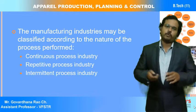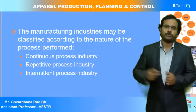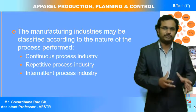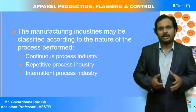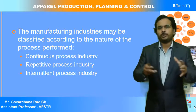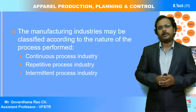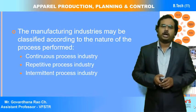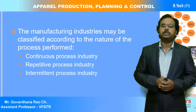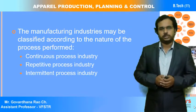Most large companies fall under the category of continuous process production systems, while some small garment industries come under intermittent process industries. Depending on the size of the industry, the orders received, and the available manpower, all these factors influence the nature of the processes performed.